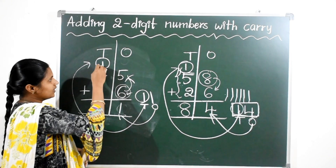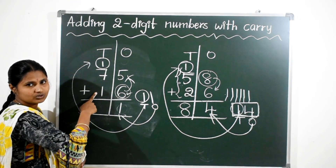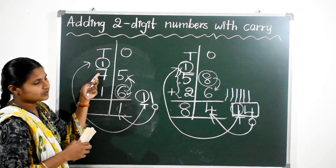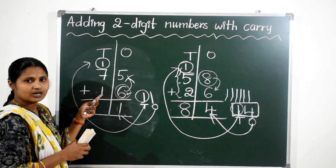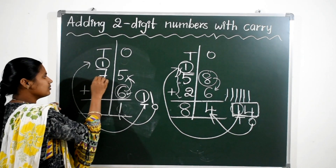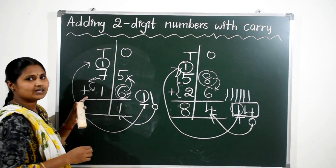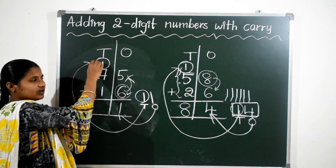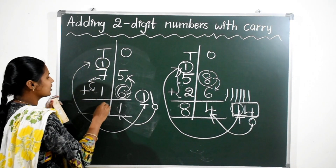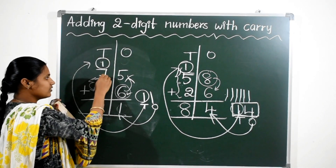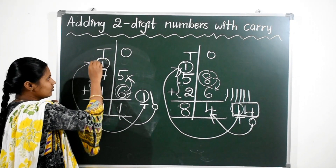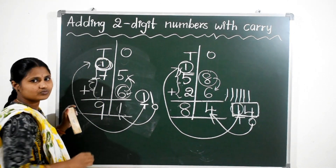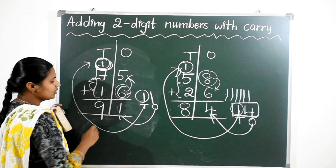Now add 1, 7, and this 1 also. 1 plus 7 is 8; 8 plus 1 is 9. Or else: 7 is the big number. 7 after 1 number is 8, and 8 after 1 more number is 9. So add these 3 digits — 1, 7, 1 — and don't forget the carry. 1, 7, 1 gives 9.